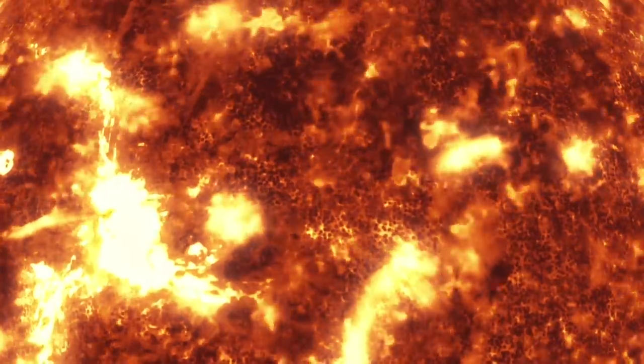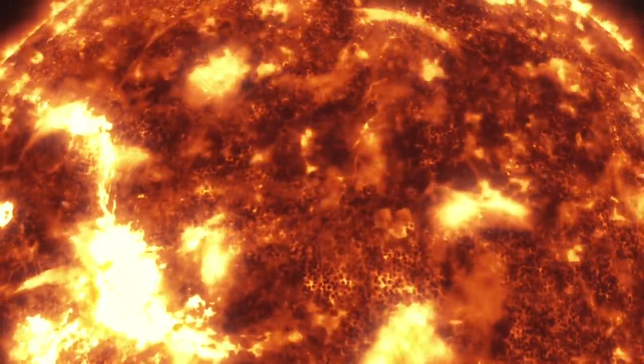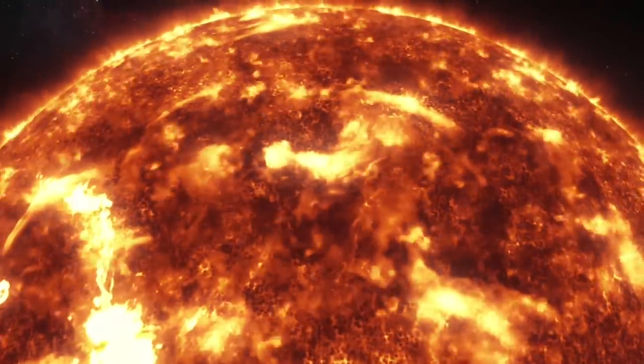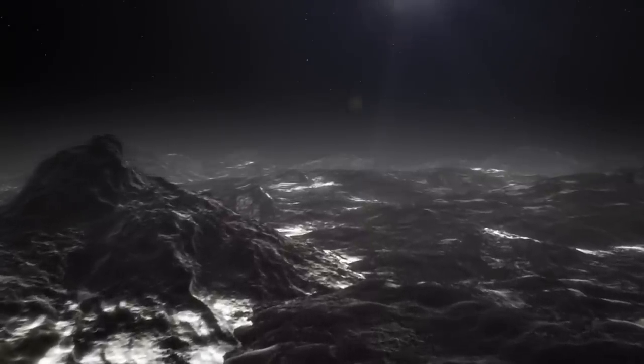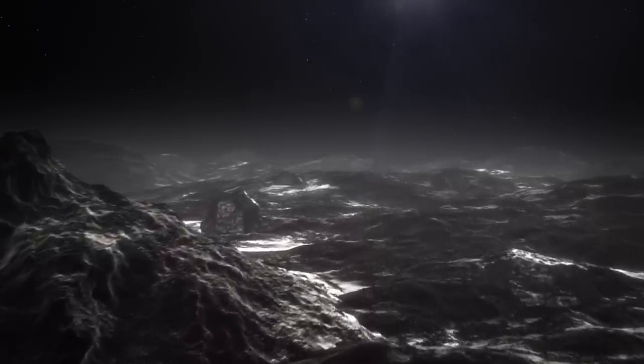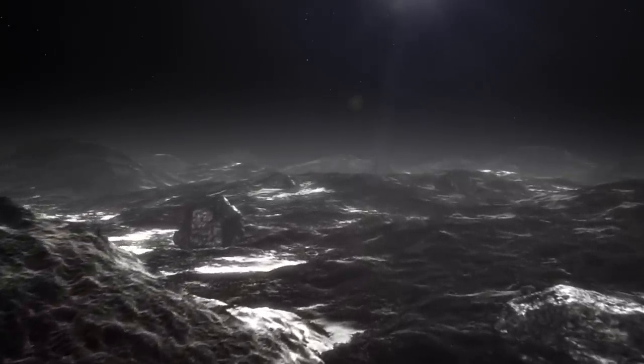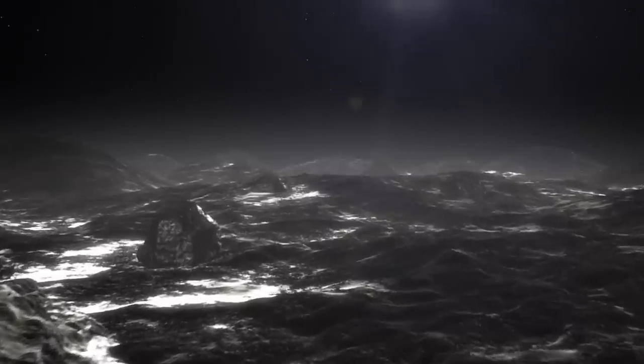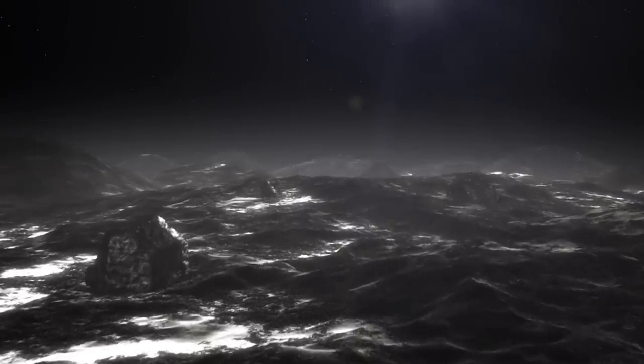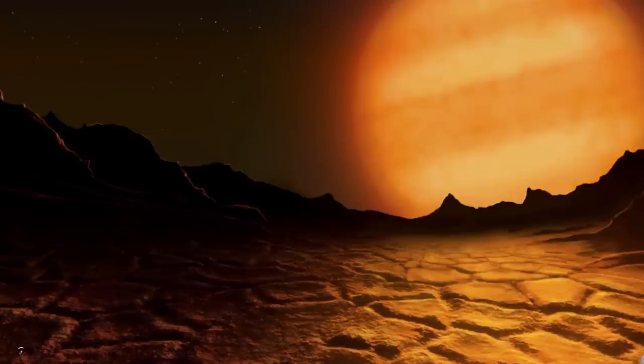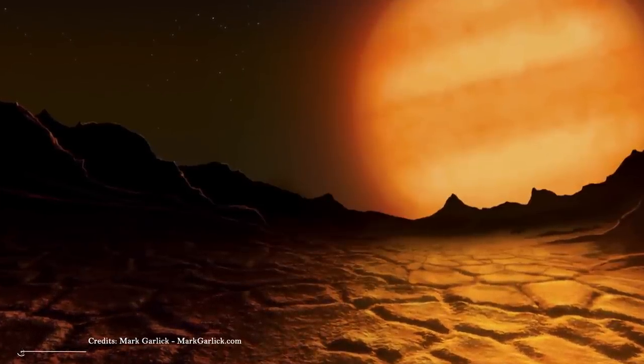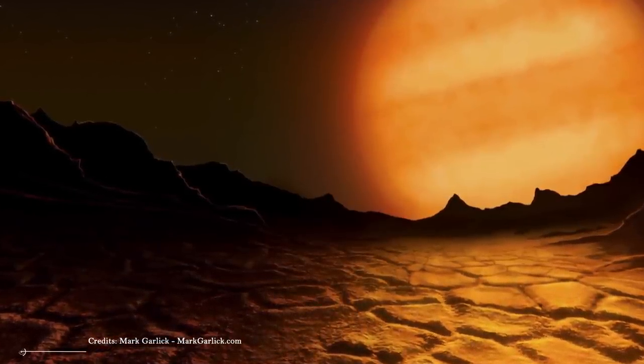This shape is thought to be caused by the strong tidal forces exerted on the planet by its parent star. As WASP-103b orbits its star, these tidal forces stretch and deform the planet, giving it its distinct shape. In addition to its unusual shape, WASP-103b is also notable for its extreme temperatures. It is classified as a hot Jupiter.